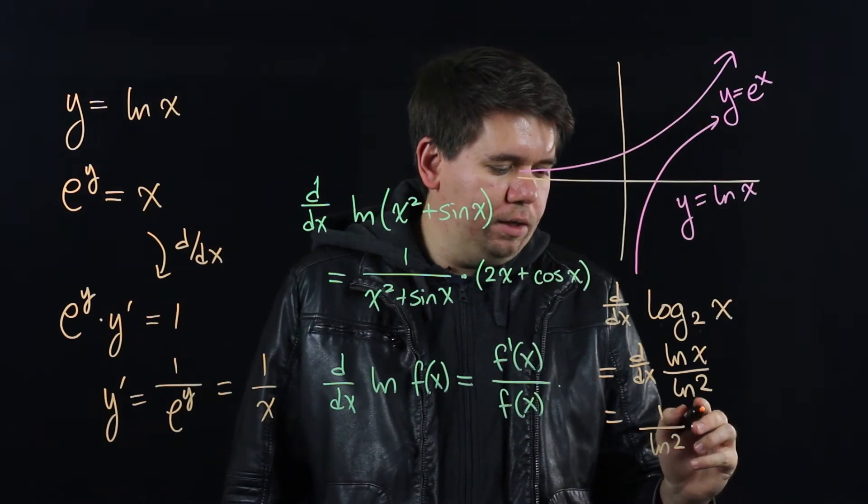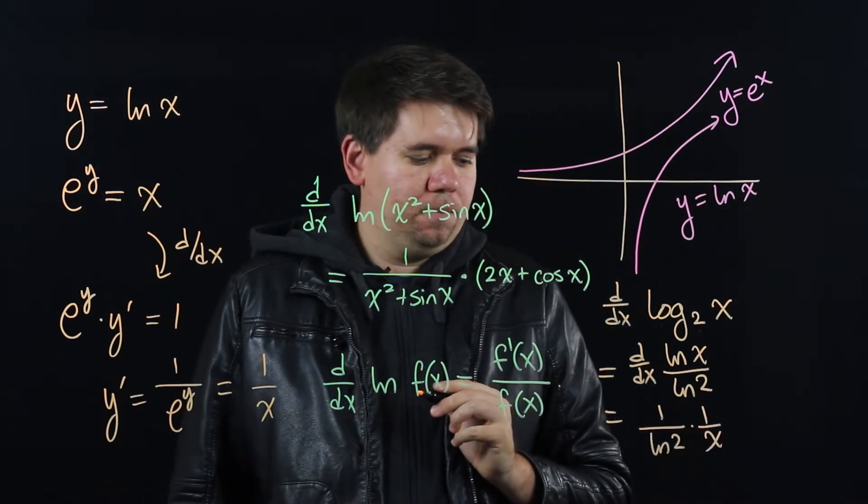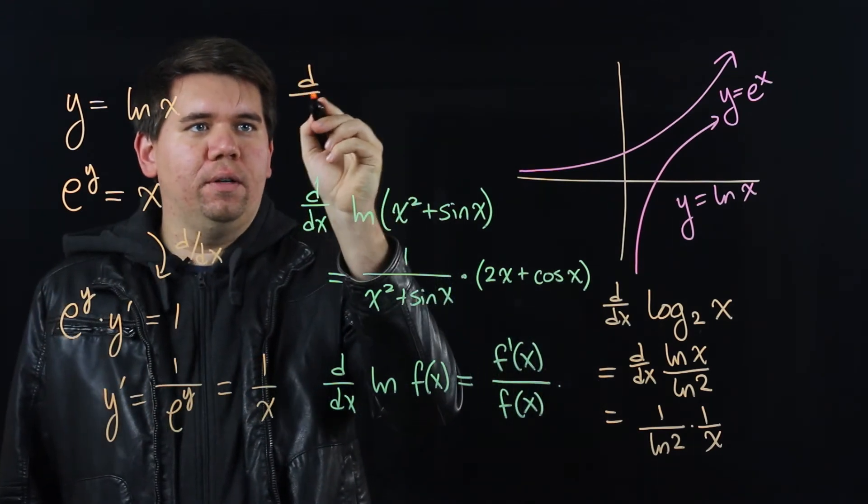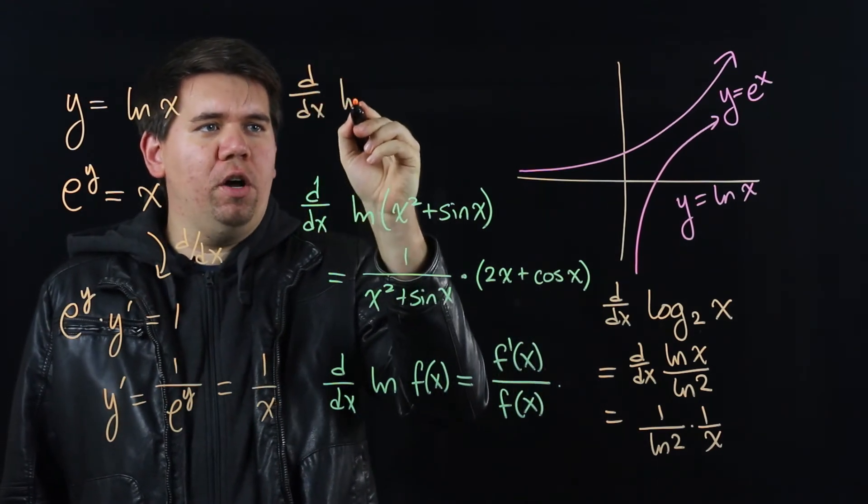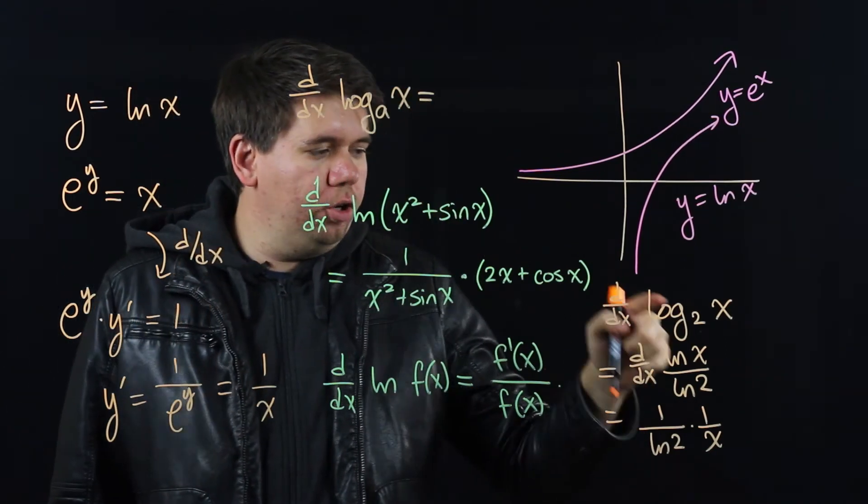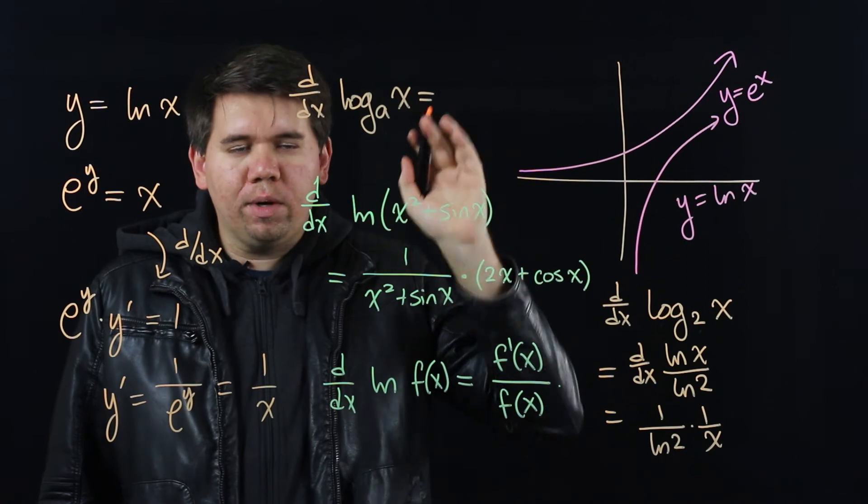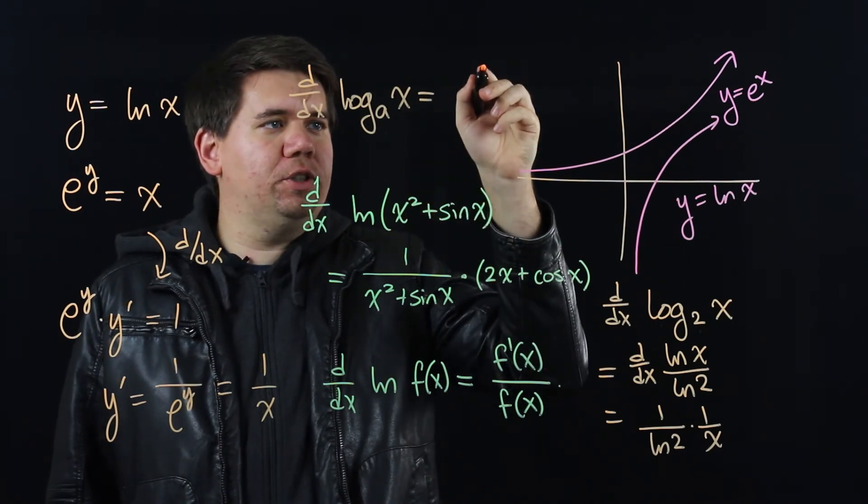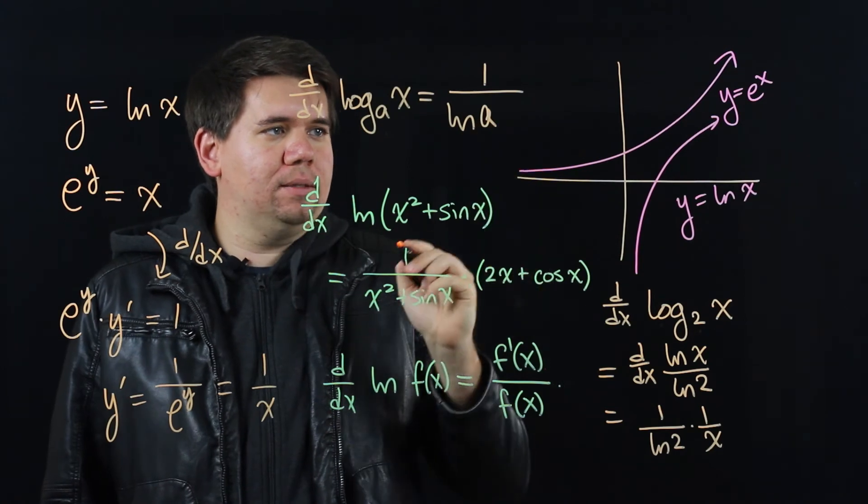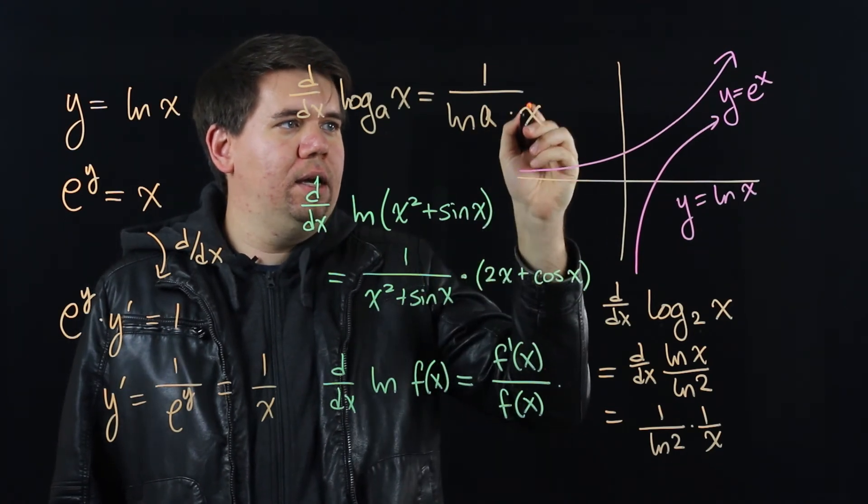In general, we see that the derivative of log of x, for any base a, it could be like 2 or 5 or 7, or whatever your base is, will be just 1 over ln of that base times x.